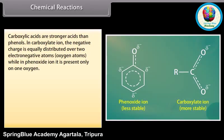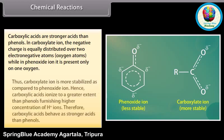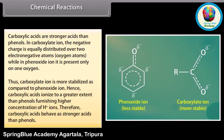In the carboxylate ion, the negative charge is equally distributed over two electronegative oxygen atoms, while in the phenoxide ion it is present only on one oxygen. Thus, the carboxylate ion is more stabilized compared to the phenoxide ion. Hence, carboxylic acids ionize to a greater extent than phenols, furnishing a higher concentration of hydrogen ions. Therefore, carboxylic acids behave as stronger acids than phenols.